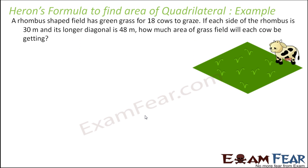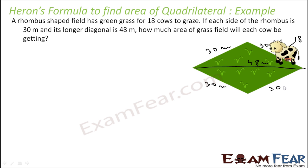Next question: a rhombus-shaped field has green grass, and there are 18 cows who have to graze this field. Each side of the rhombus is 30 meters, and the longer diagonal is 48 meters. We have to find the area of grass each cow will get, so we need to find the total area of the field and then divide by 18.